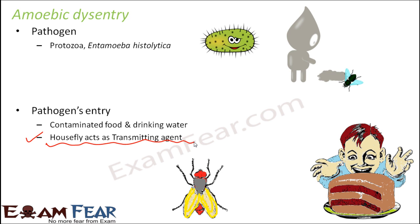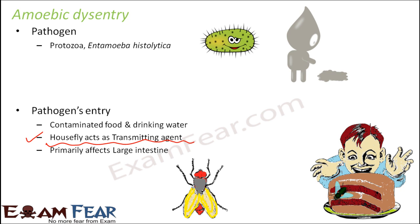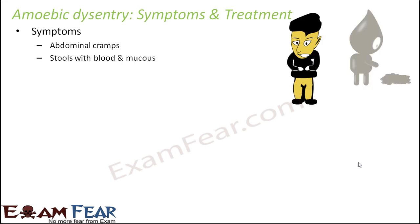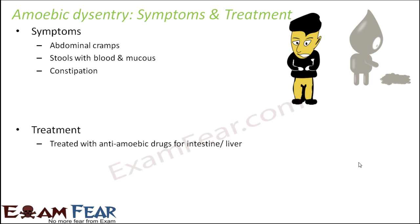As seen in this picture, the housefly first sits on human excreta, picks up the pathogen, and then sits on somebody's food. When that person eats the food, they take the pathogen inside their body and suffer from dysentery. Dysentery primarily affects the large intestine. Symptoms include abdominal cramps, stools with blood and mucus, and constipation. It can be treated with anti-amoebic drugs for the intestine and liver. Please remember to maintain cleanliness.